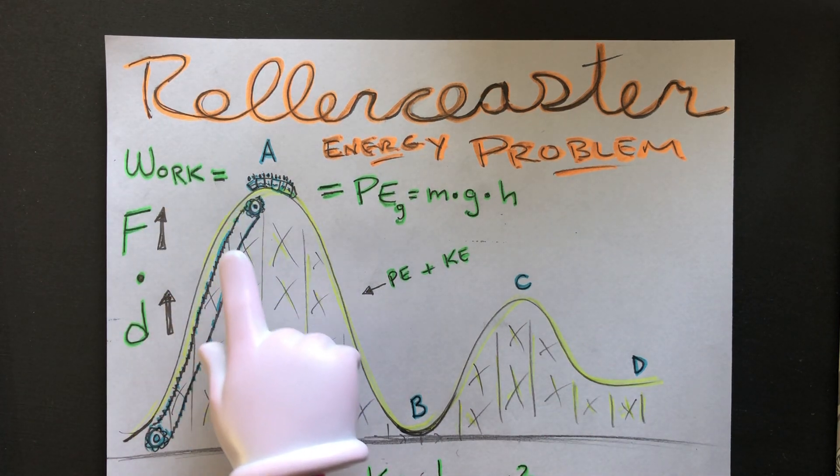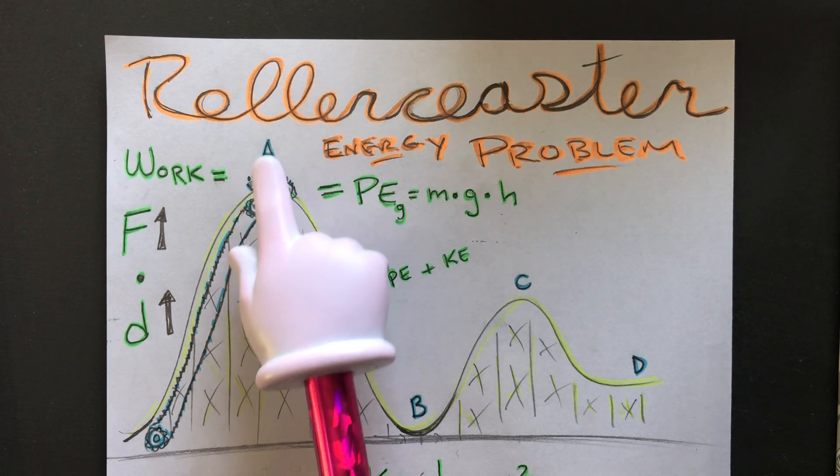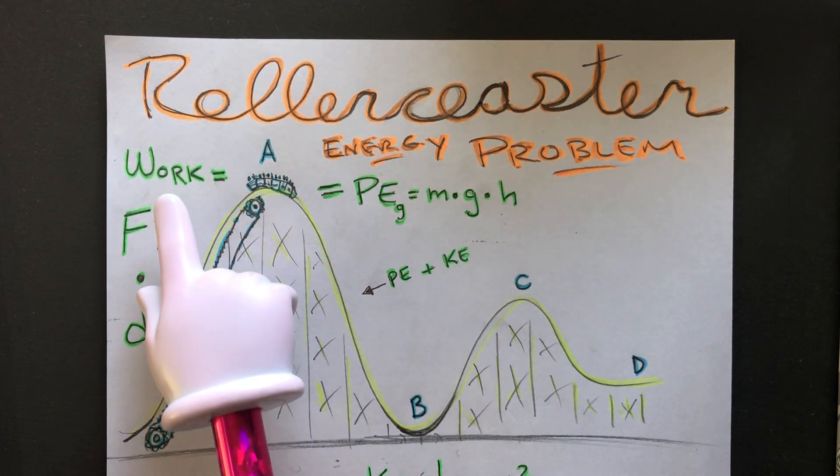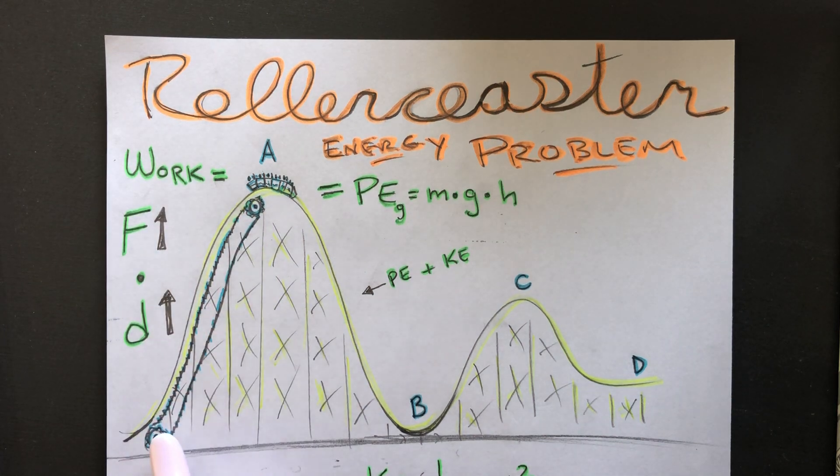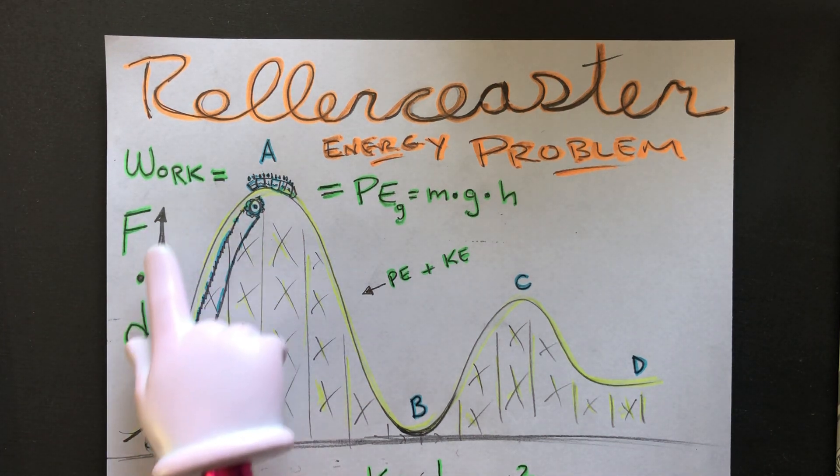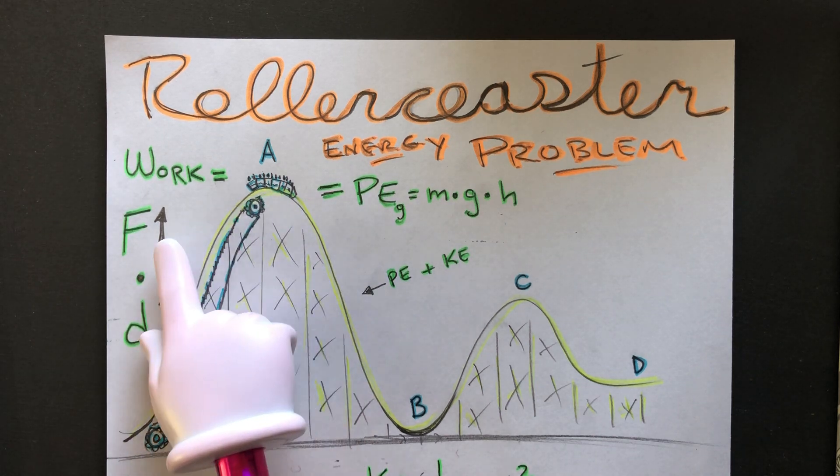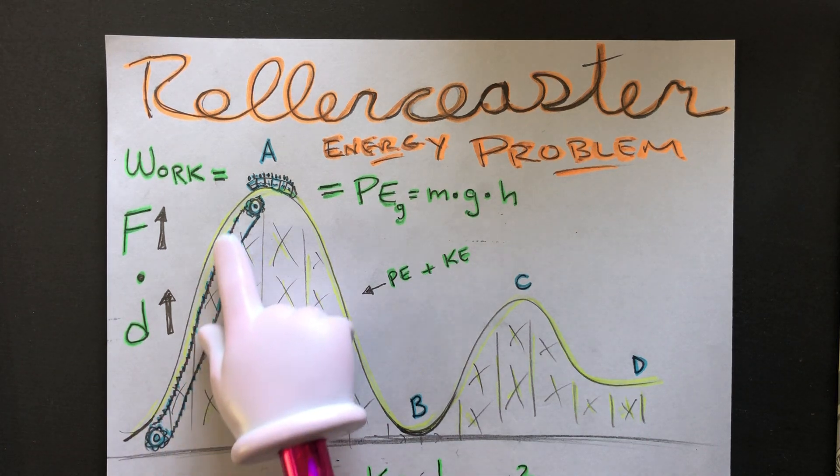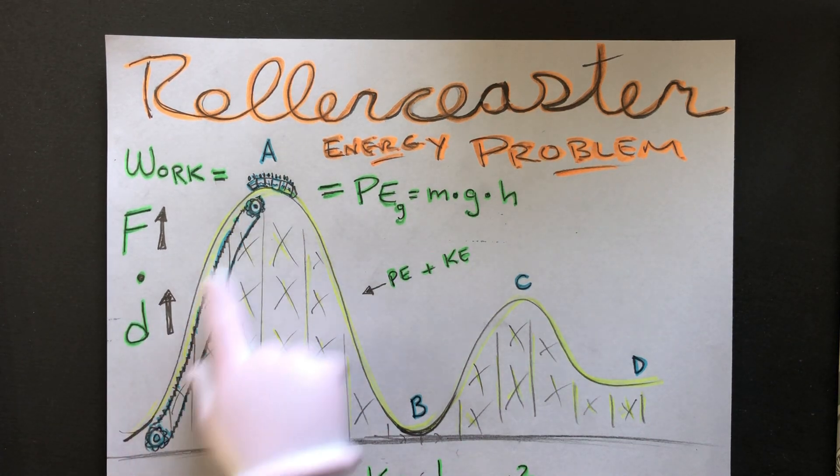Just the basics to kind of talk about getting up to point A and then B, C, and D. So first, the motor has to apply some work which is basically lifting, so the force is actually m times g, it's the weight. So it's lifting the weight of the coaster and the people to the top and that's the distance.